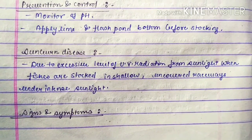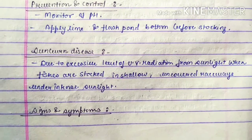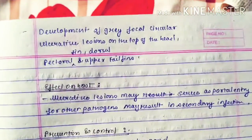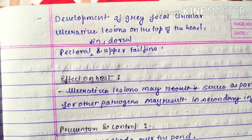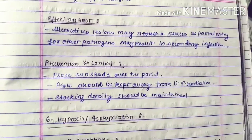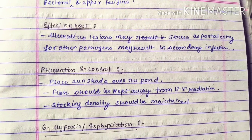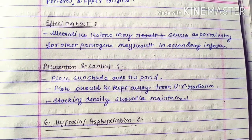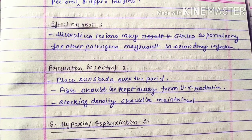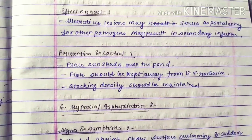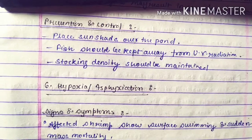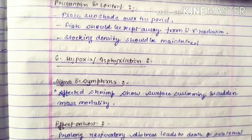Sunburn disease is caused by excessive levels of UV radiation from sunlight when fishes are kept in shallow, uncovered raceways under intense sunlight. Signs and symptoms include the development of gray focal circular ulcerative lesions on the top of the head, pectoral fin, dorsal, and upper tail fins. Effects on the host: ulcerative lesions may serve as a portal of entry for other pathogens and may result in secondary infection. Prevention and control: place sunshade over the pond, keep fish away from UV radiation, and maintain appropriate stocking density.